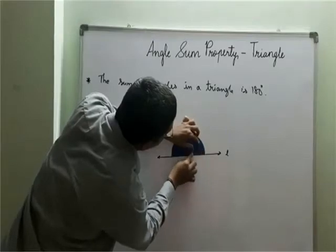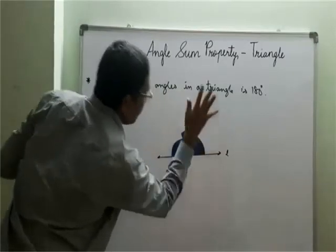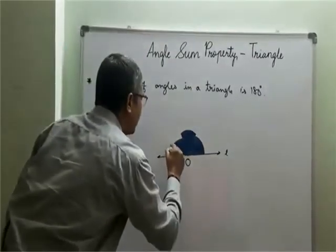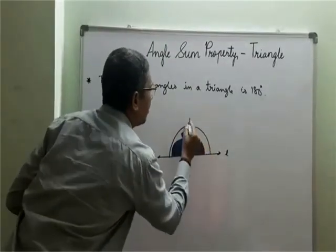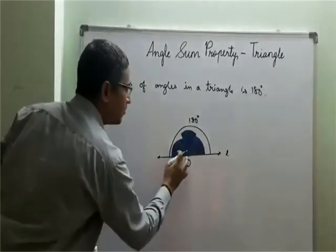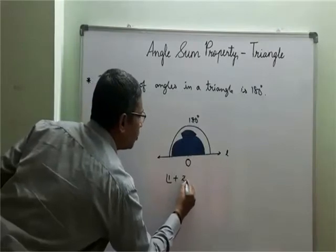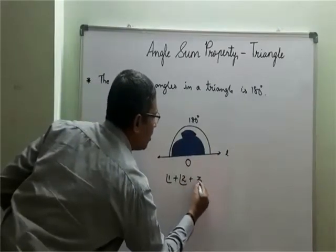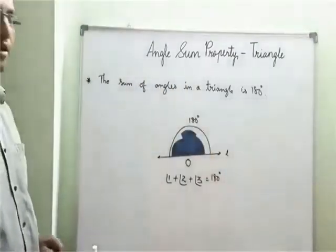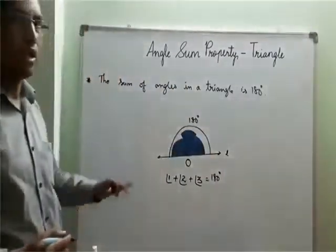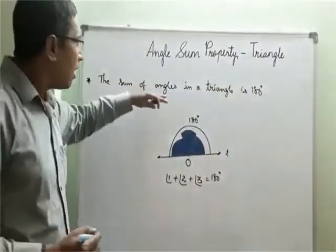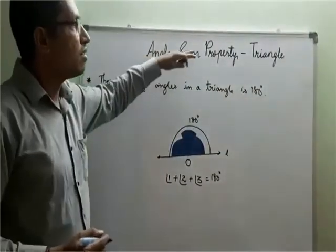Now take a look at this figure children. What is the angle now here, from here till here? It is 180 degrees. Now that is made up of these three angles. That means if I add angle 1 plus angle 2 plus angle 3, how much I get children? Yes, it is 180 degrees. So this is the activity to show that the sum of the angles in a triangle is 180 degrees and this is called the angle sum property of a triangle.